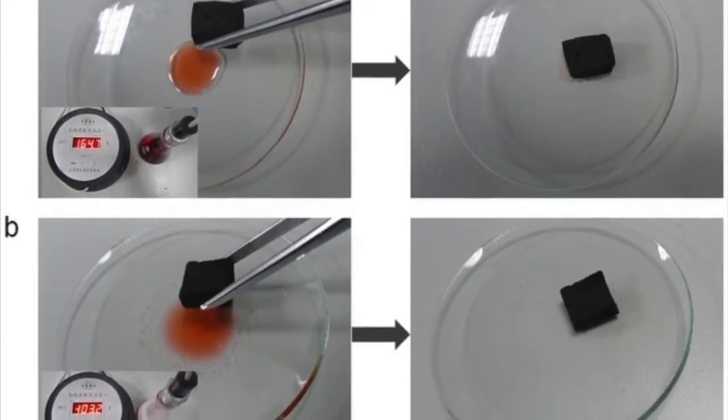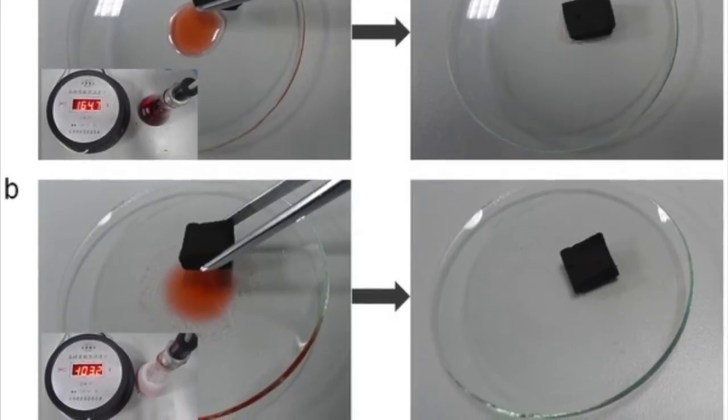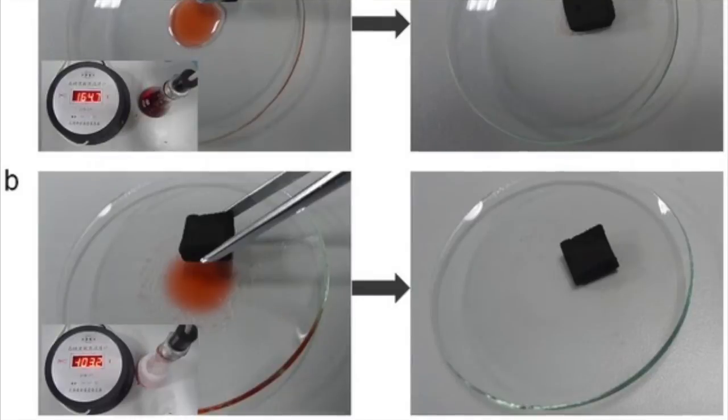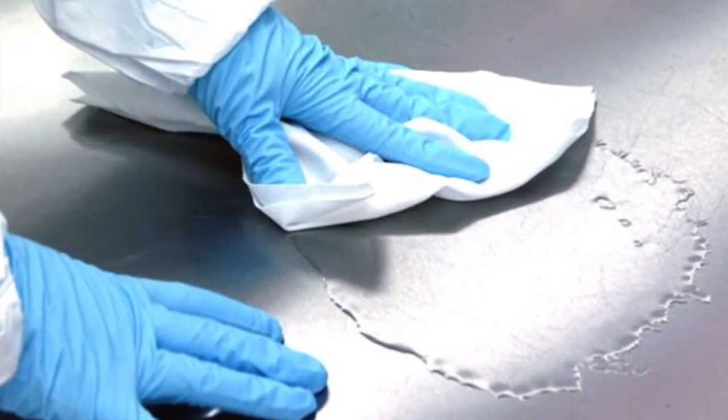These factors, in combination with their low density, allow for the carbon nanotube sponges to float on the surface of the water, absorbing only the oil that is present. Due to the porosity, lightness, and large surface area that this material possesses, it is extremely effective as an oil absorbent.